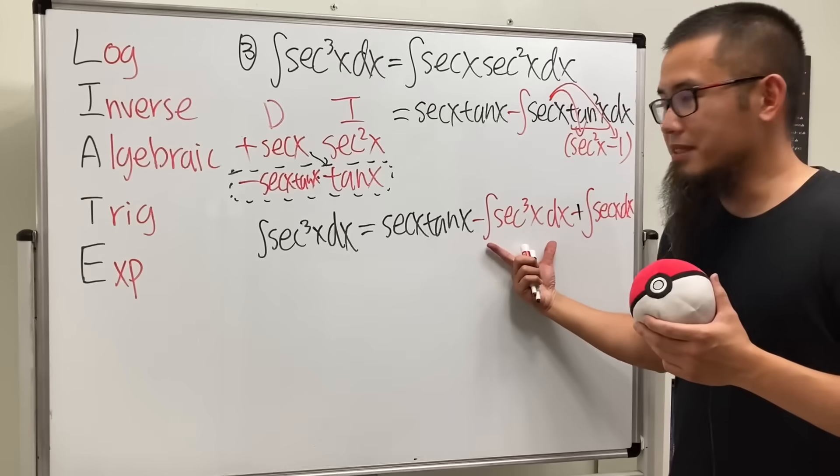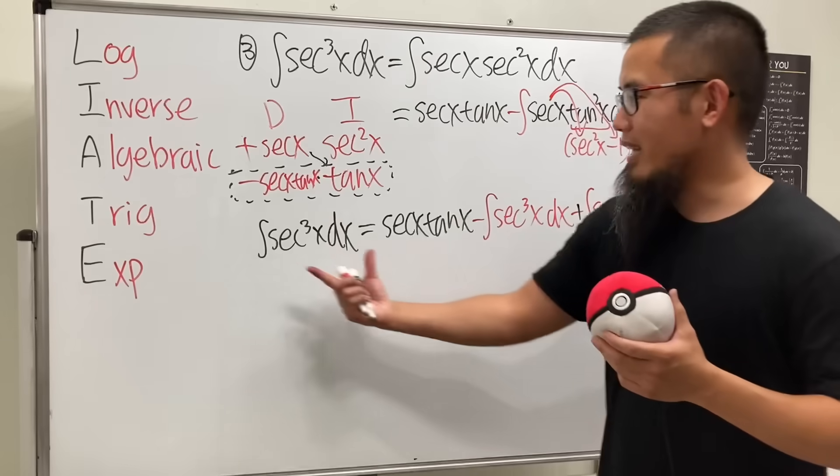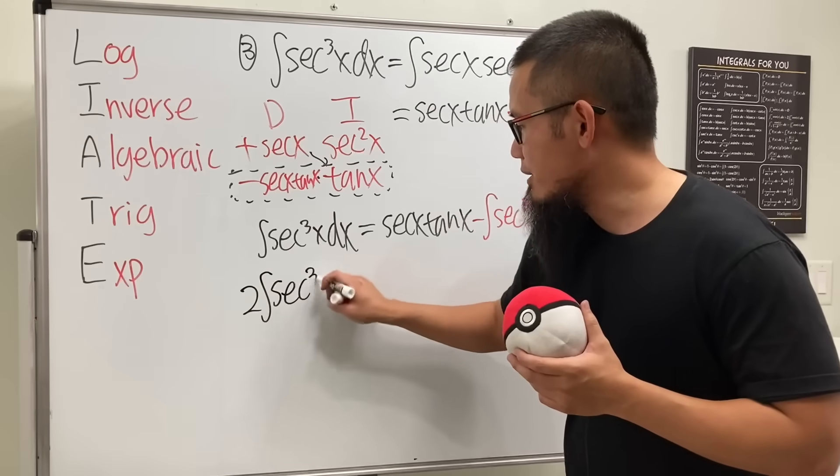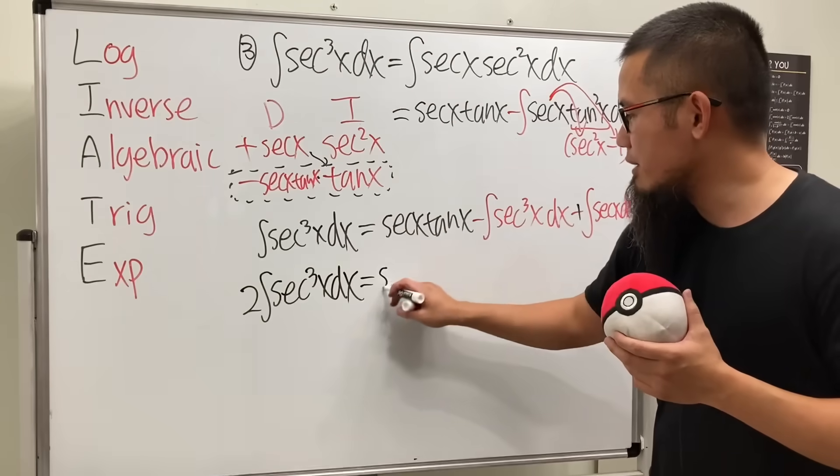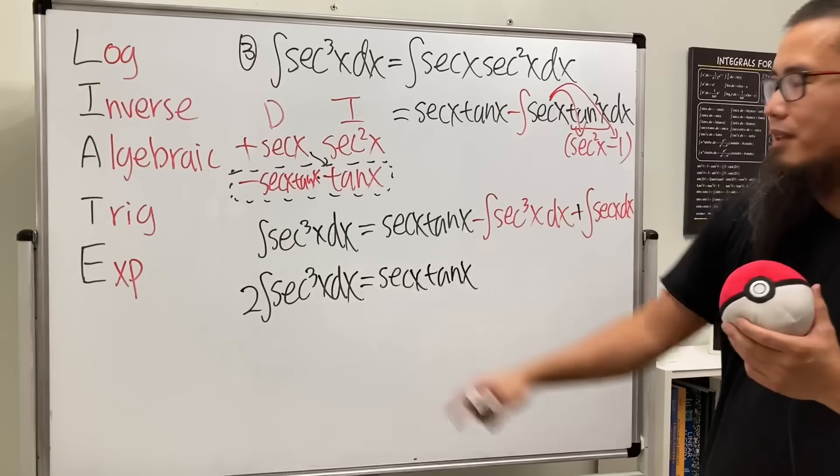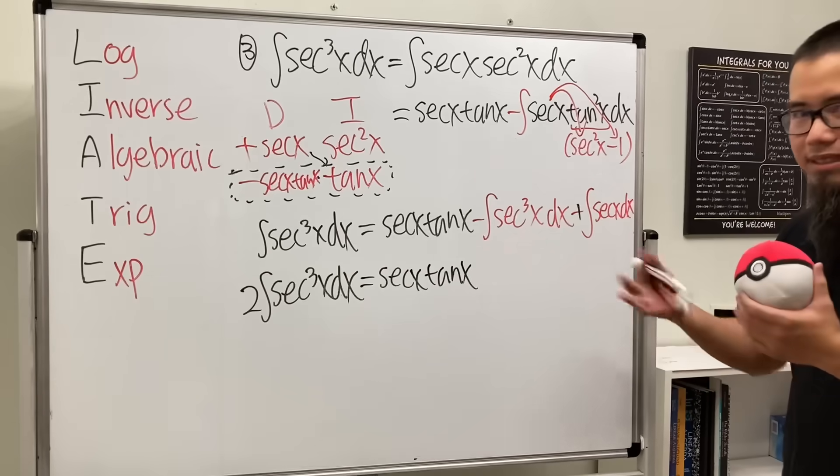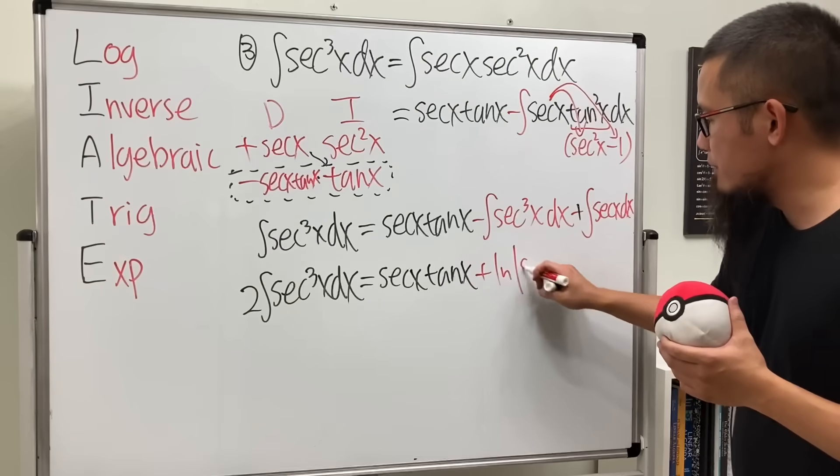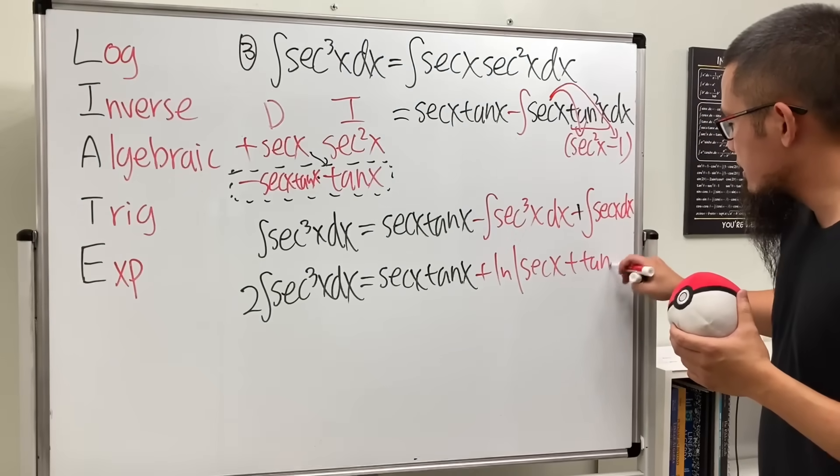And we will also have to distribute this to that and negative, negative, so it becomes the positive here integral and then we just have secant x dx. Now you see, this, we can just move that to the other side and we'll end up with 2 integral of secant to the third power x dx.